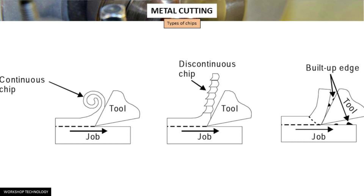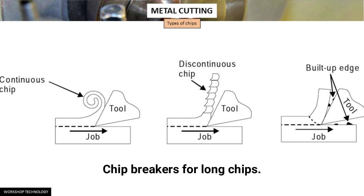It may wrap up on the cutting tool and workpiece and interrupt the cutting operation. Thus, it becomes necessary to deform or break long continuous chips into small pieces. This is done by using chip breakers, and hence chip breakers become an integral part of the tool design or a separate device.